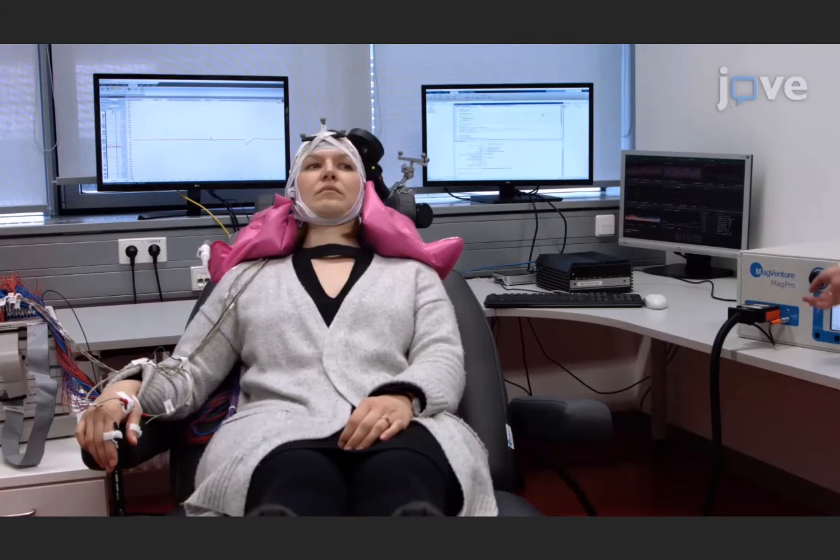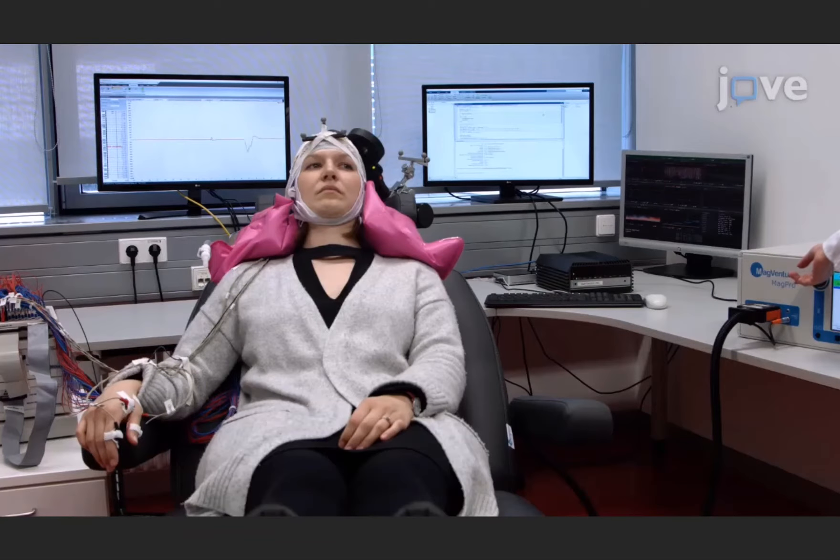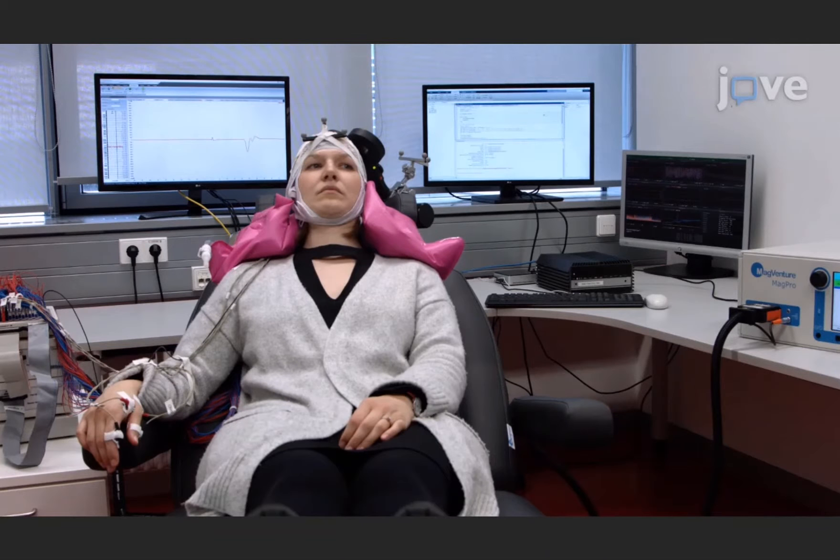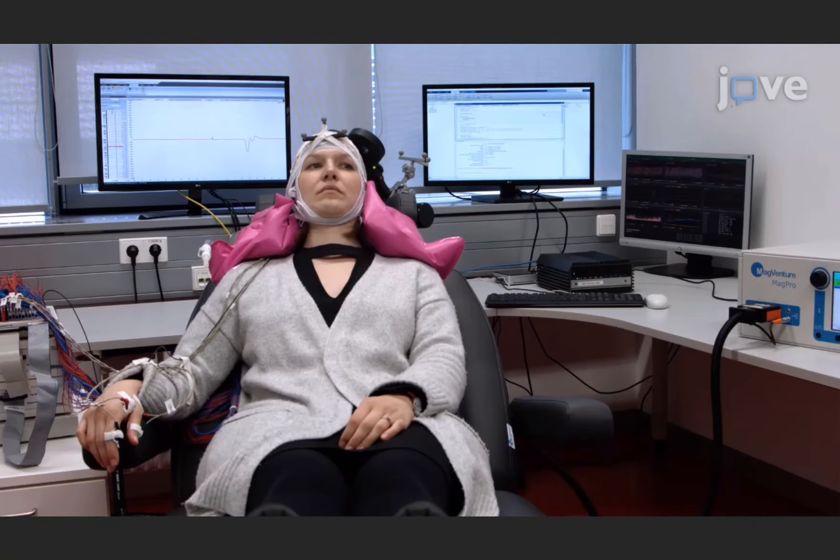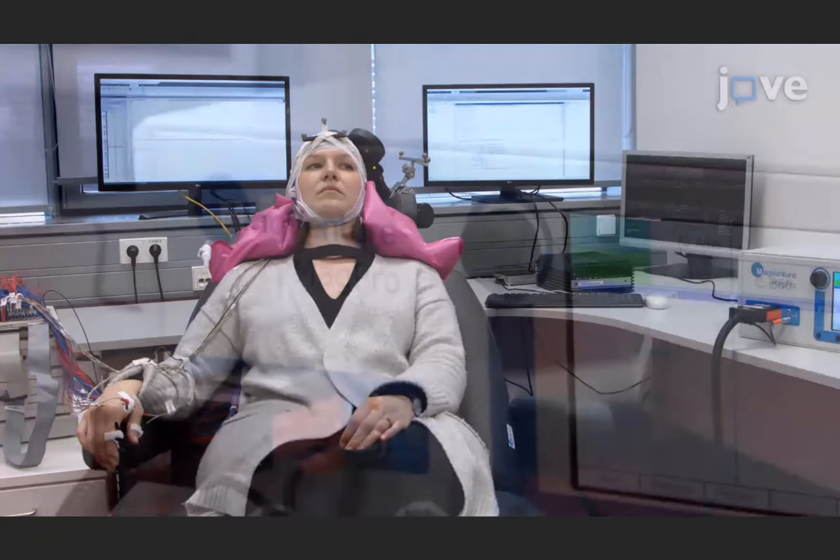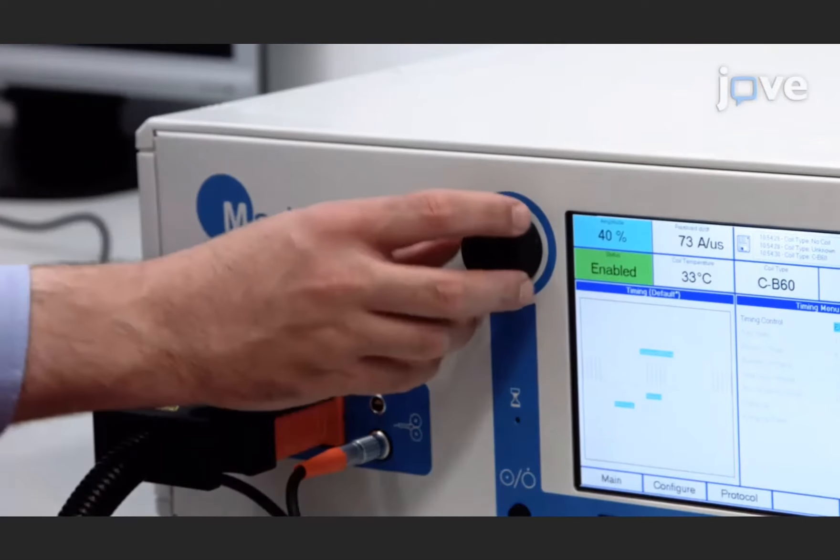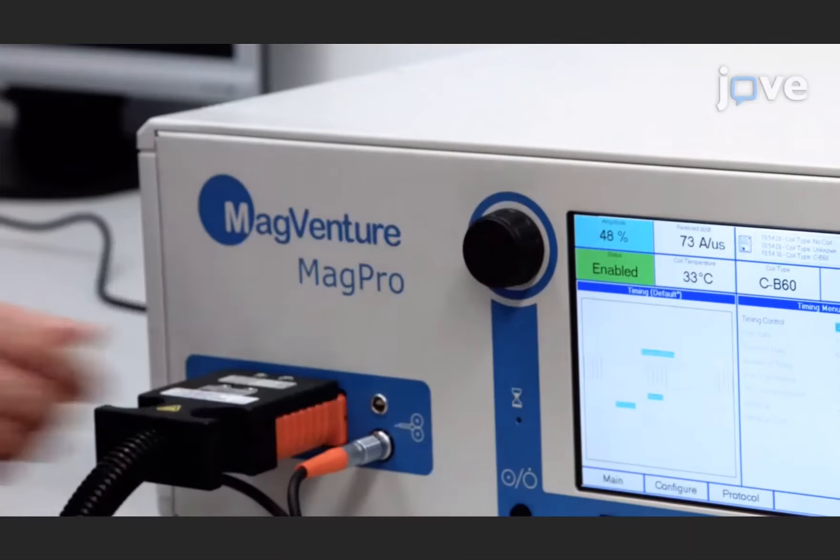To determine the threshold stimulation intensity, gradually adjust the stimulation intensity until 50% of the TMS pulses result in a motor response. Here, the intensity has been set to 110% of the threshold intensity.